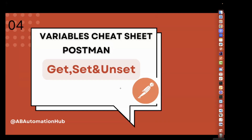Hi everyone, I'm Chhita Jassai. Welcome back to AB Automation Hub. In today's video, we are going to learn how we can fetch, set, and delete variable values at different variable scopes in Postman.